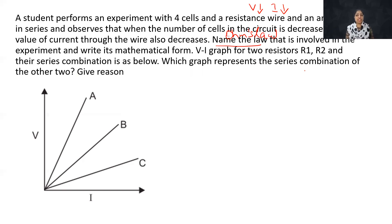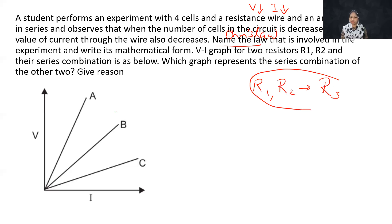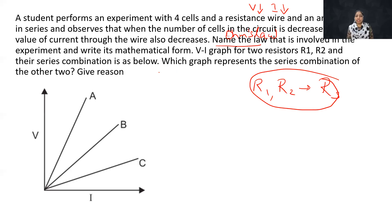This is the V-I graph for two resistances R1 and R2 and their series combination shown below. Which graph represents the series combination of the other two — R1 and R2? It is a series combination, Rs. If we look at the three graphs, slope of V-I graph is equal to resistance — higher the slope, higher the resistance.